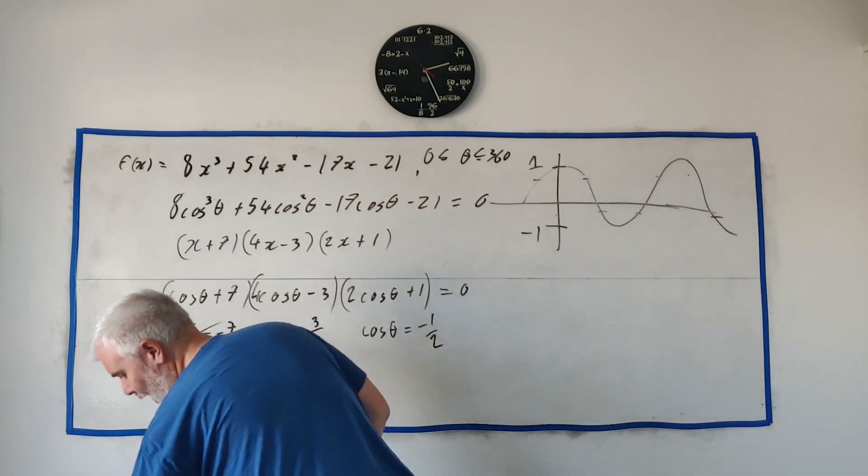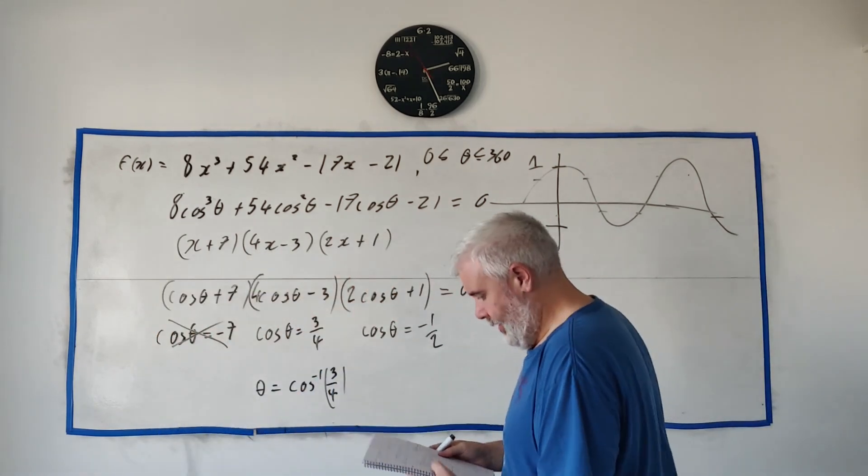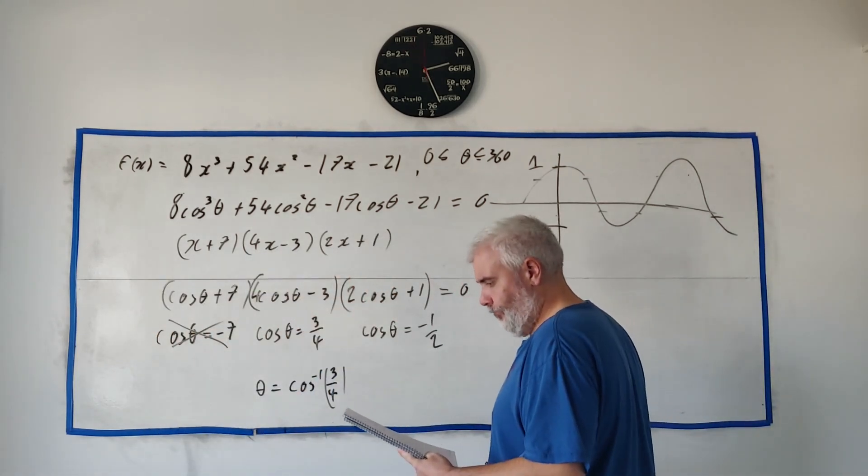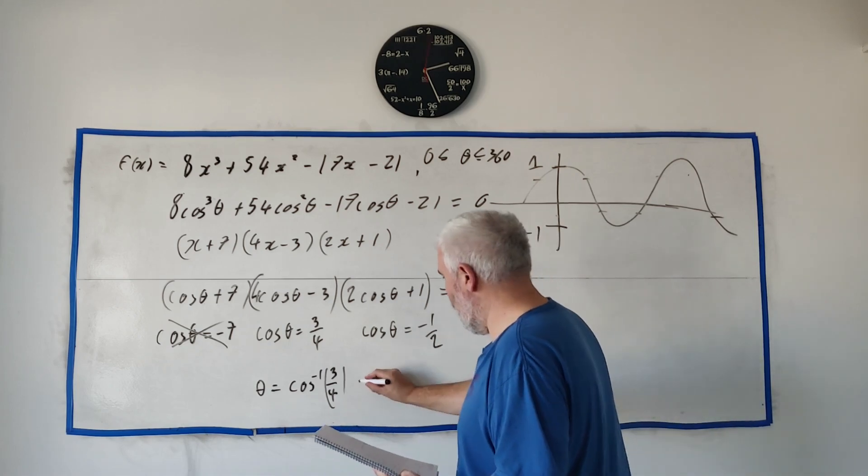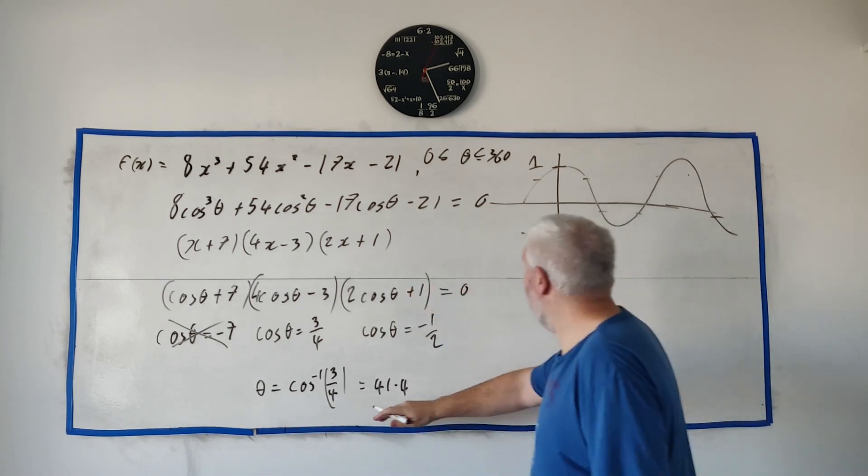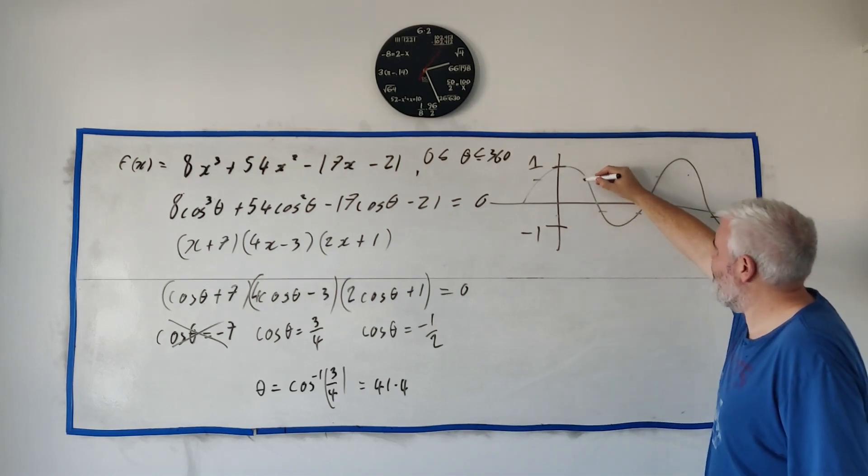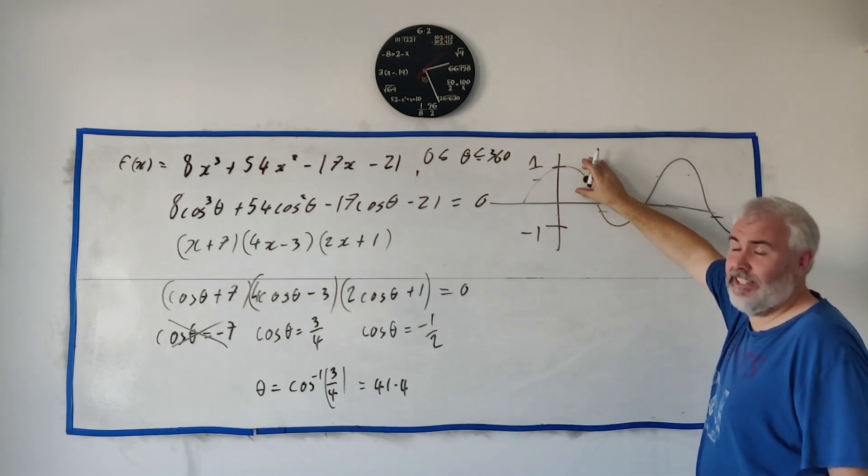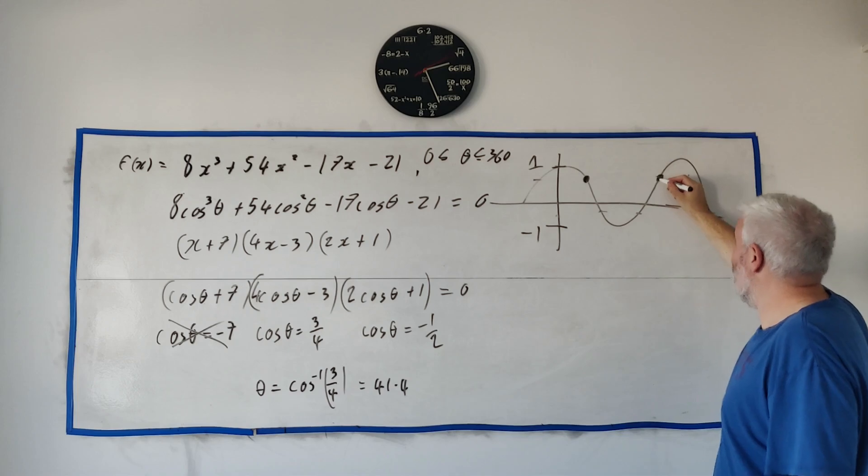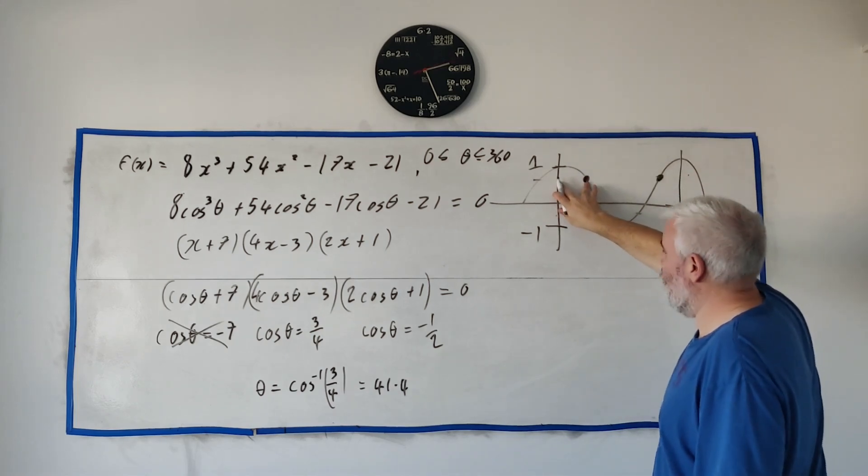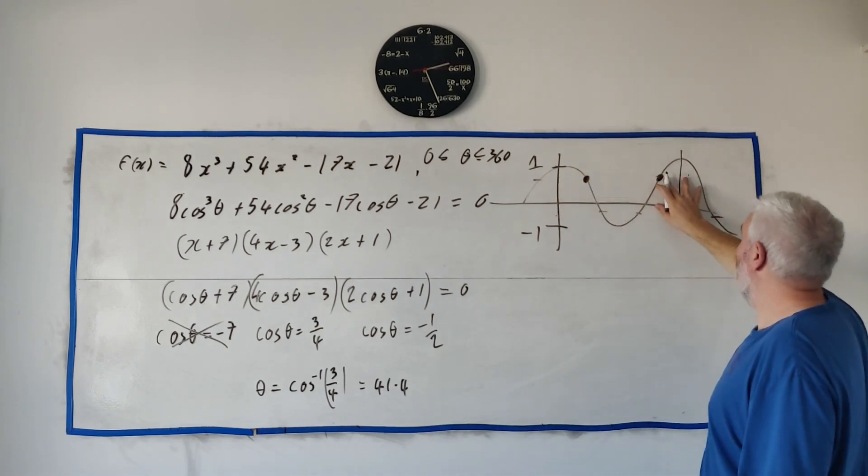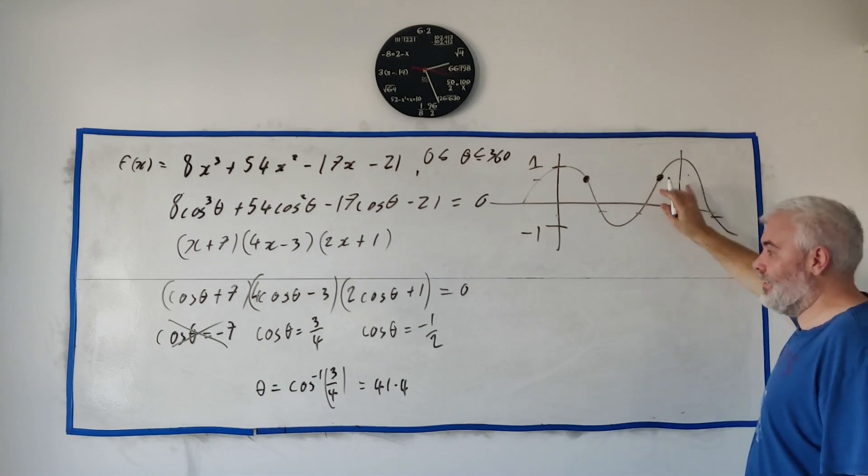And looking back at the question they do tell us that so this line here they do tell us the answer has to be bigger than zero and less than 360 so we're in degrees actually not radians. Okay so what are the answers? We just saw this theta is equal the inverse cosine of three over four and the calculator would tell us that is equal to 41.4.